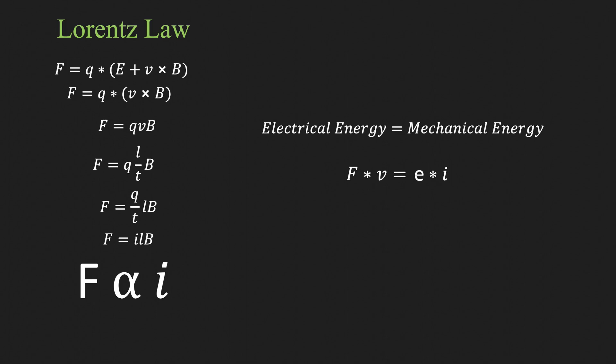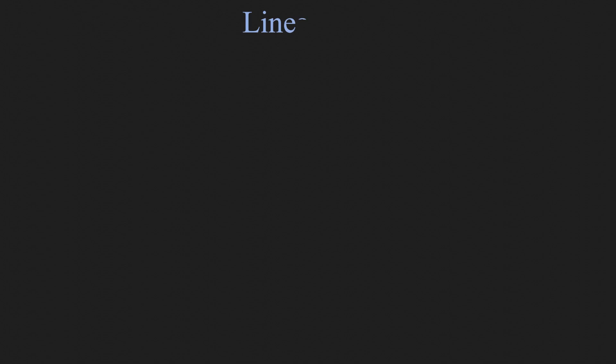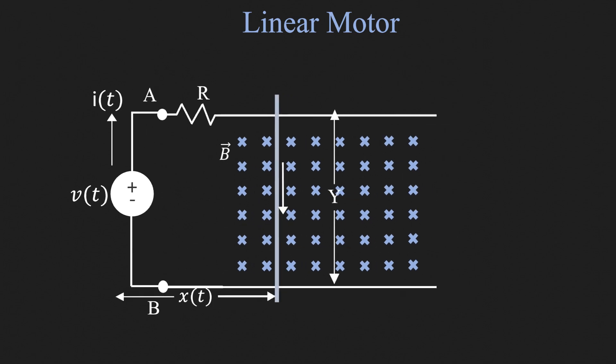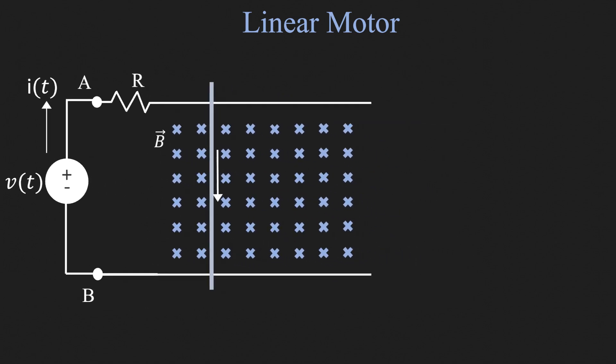Having understood Lorentz law, we can now design our basic version of linear motor. We will use a voltage source to drive the current in the circuit and the resistor represents the resistance of the conductors. Since the current is now flowing in the metal rod, it will develop a force which will move the rod.